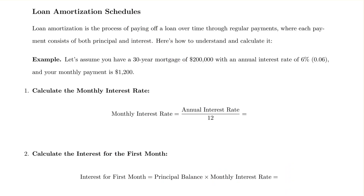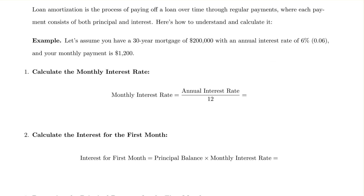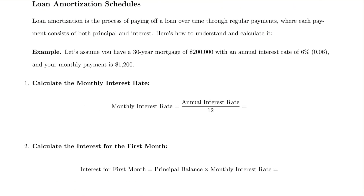A loan amortization schedule tells you, for each monthly payment, how much is going towards reducing the principal and how much is going towards interest. Early in the loan, almost all of the payment goes towards interest and very little reduces the principal. However, as you keep paying, the balance shifts — towards the end, the majority of the payment goes to principal and very little to interest.